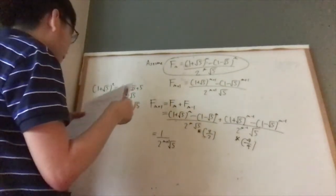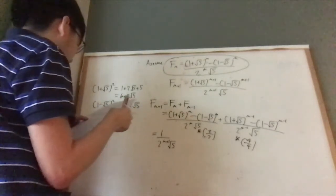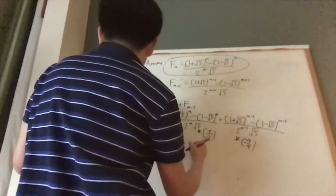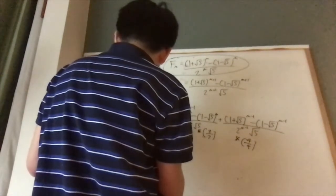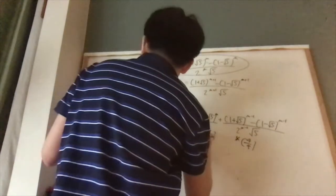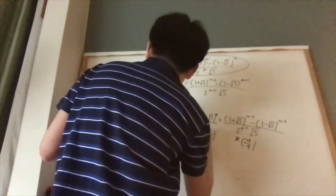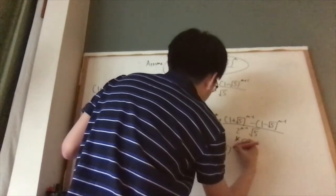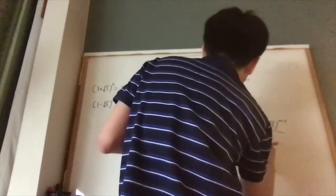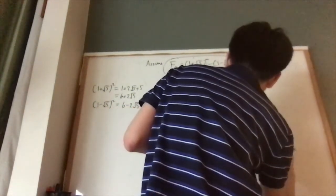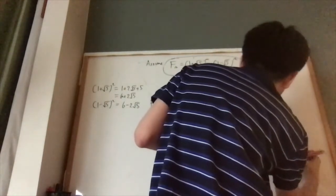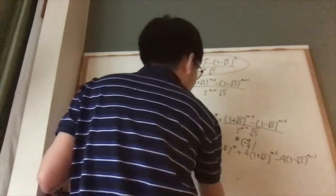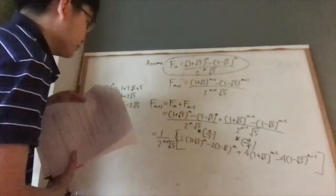And then if we multiply this out, I'll get this. And then I have 2 times 1 plus square root of 5 to the n minus 2 times 1 minus square root of 5 to the n. And then I have this plus 4 times 1 plus square root of 5 to the n minus 1 minus 4 times 1 minus square root of 5 to the n minus 1. Close this entire expression here.